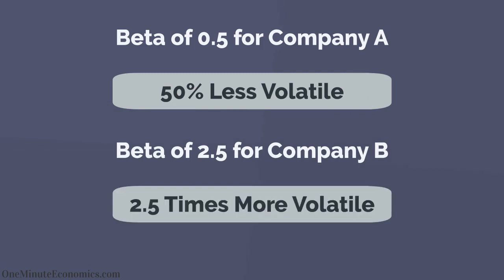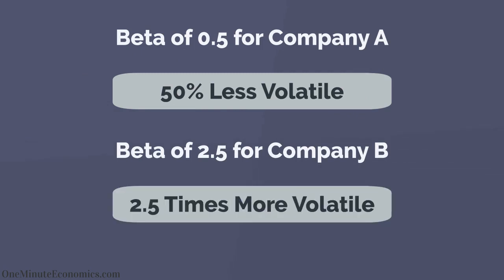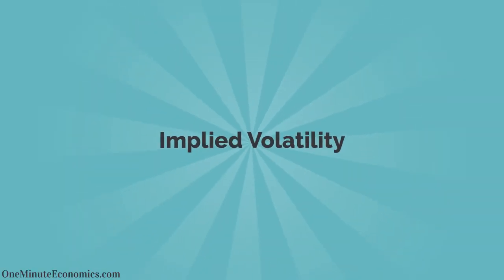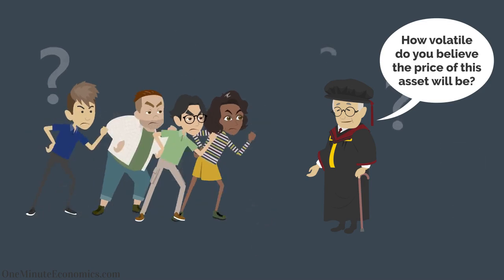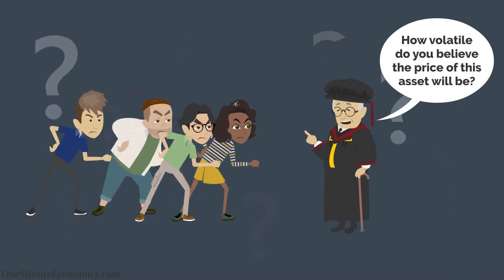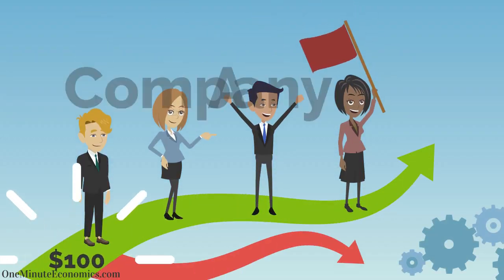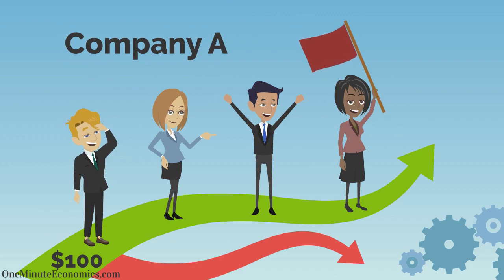Alternatively, we can use future-oriented metrics such as implied volatility to see how volatile the market thinks the stock price will be. If Company A starts the year at $100 per share and the implied volatility is 5%, the market expects it to trade up to $5 higher or $5 lower over the course of one year.